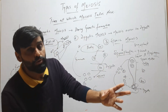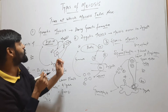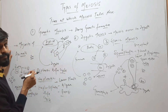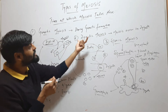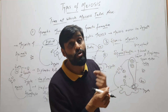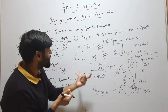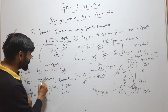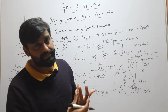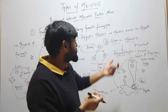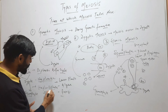So we have three different types of meiosis on the basis of time at which meiosis takes place. First is gametic meiosis — it occurs during gamete formation, is found in the majority of animals, and results in a diplontic life cycle. Second is zygotic meiosis — meiosis occurs in the zygote, found in lower plants, algae, and fungi, resulting in a haplontic life cycle. Third is sporic meiosis — meiosis occurs inside the sporophyte, found in organisms with a haplodiplontic life cycle.